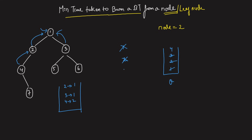Continuing the level order traversal: node 3 has left child 5, so parent of 5 is 3; node 3 has right child 6, so parent of 6 is 3. We push 5 and 6 into the queue. Node 4 has a right child 7, so parent of 7 is 4. Nodes 5, 6, and 7 have no children. The traversal is complete and all parent pointers are stored in the hash map.